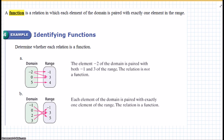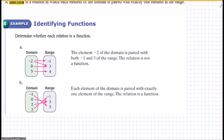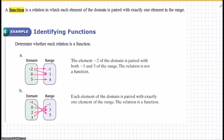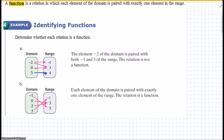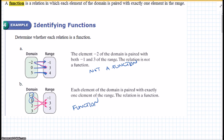A function is a relation in which each element of the domain is paired with exactly one element of the range. Determine whether each relation is a function. You can only have one arrow coming out of each domain element. Looking at this one, you see there are two arrows coming out of negative 2 — negative 2 is paired with both negative 1 and 3 — so it is not a function. For B, there is only one arrow coming out of each number of the domain, so it is a function.